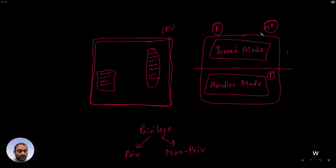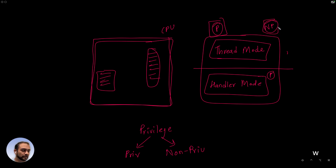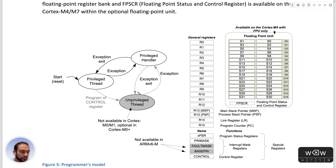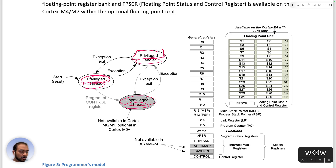Even in thread mode, if it is privileged, the code can reach out to the control and status registers. You as a programmer can write code that accesses the control register, for example. In the non-privileged state, that is forbidden. So: thread mode can be privileged or unprivileged, and handler mode is always privileged.